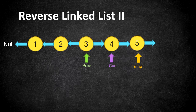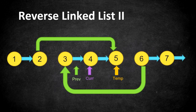So how are we going to use this for this particular problem? If we are given an index range from left to right, we iterate our pointers until we reach left, and then reverse the list until we reach right. We loop through the linked list until we reach the left index and reverse using the same logic until we reach the right index.